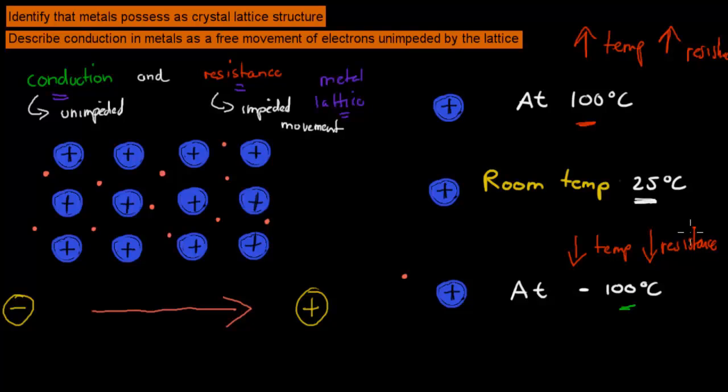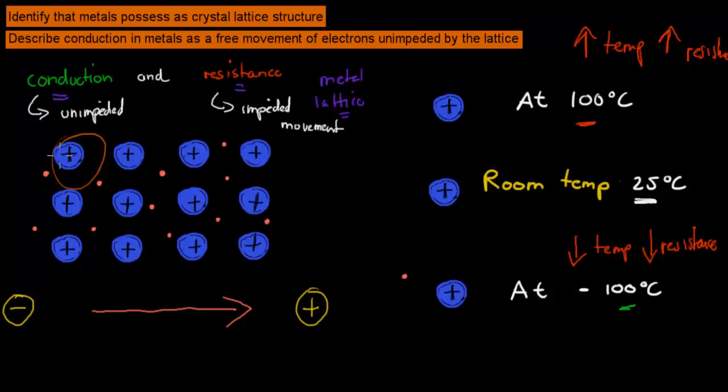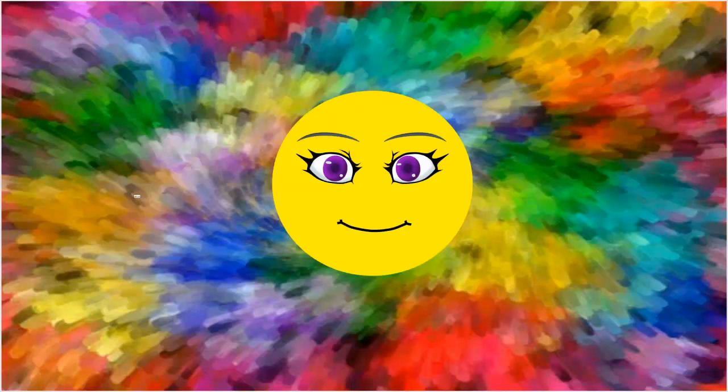So I'll talk about the dot points again. Identify that metals possess a crystal lattice structure. That was just the idea that we have this crystal lattice structure here. And describe conduction in metals as free movement of the electrons unimpeded by the lattice. So what we meant by conduction is that these electrons can pass through this lattice without being hit by other electrons or being interfered with by these positive nuclei. Whereas resistance is the opposite. Resistance means if something does happen and you do actually have a bump somewhere or they're coming too close, then that would be considered to be resistance. I hope that was useful. Thank you for watching.